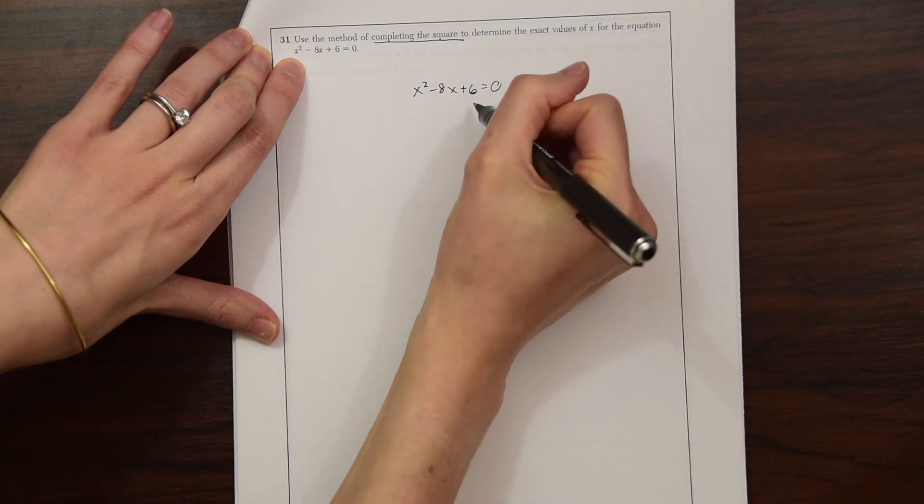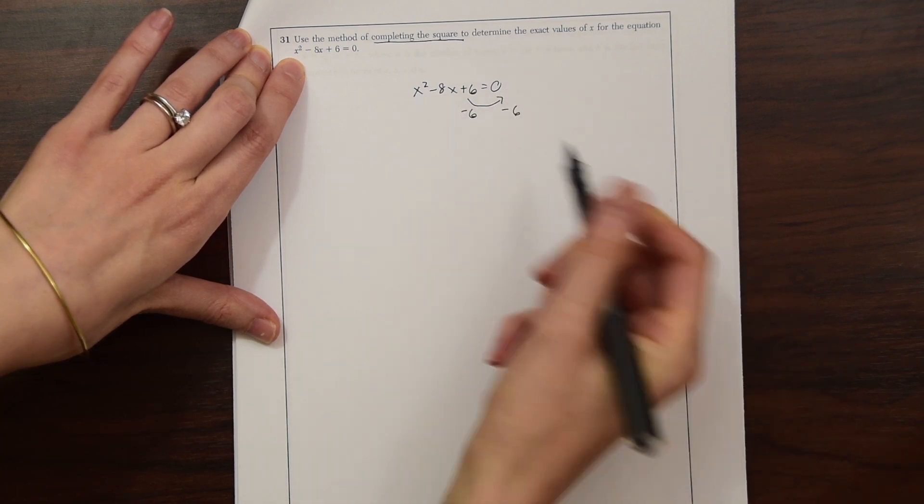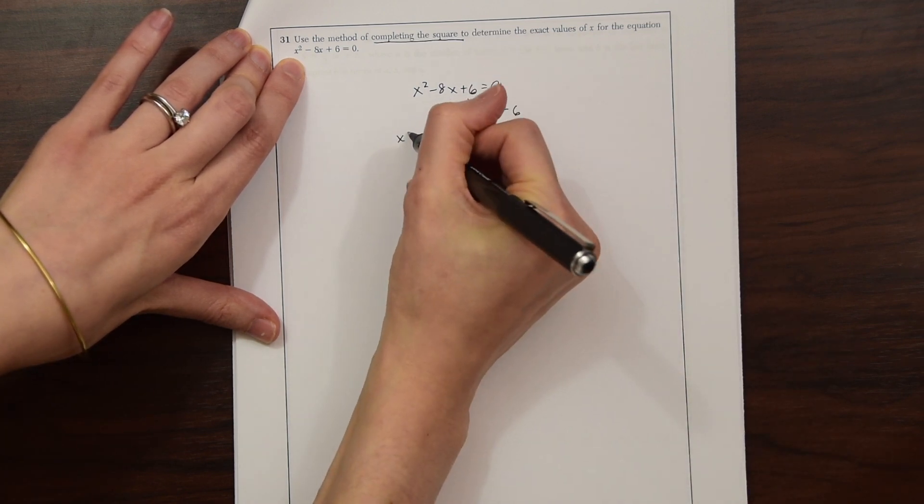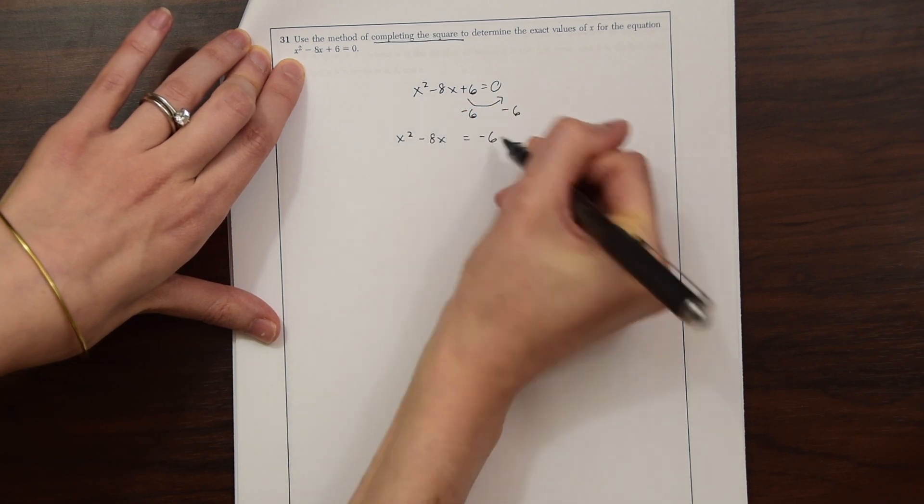So the first step is always to move the whole number to the other side. So in this case, we're going to be subtracting 6 from both sides. We do that and we get x squared minus 8x equals negative 6.